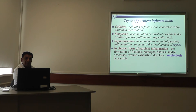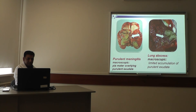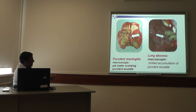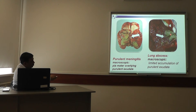Slide examples: amyloidosis of the kidney; purulent meningitis showing microscopic structure with overlying purulent exudates — the light green color indicates accumulation of pus; and lung abscess showing microscopic picture of limited accumulation of purulent exudates.